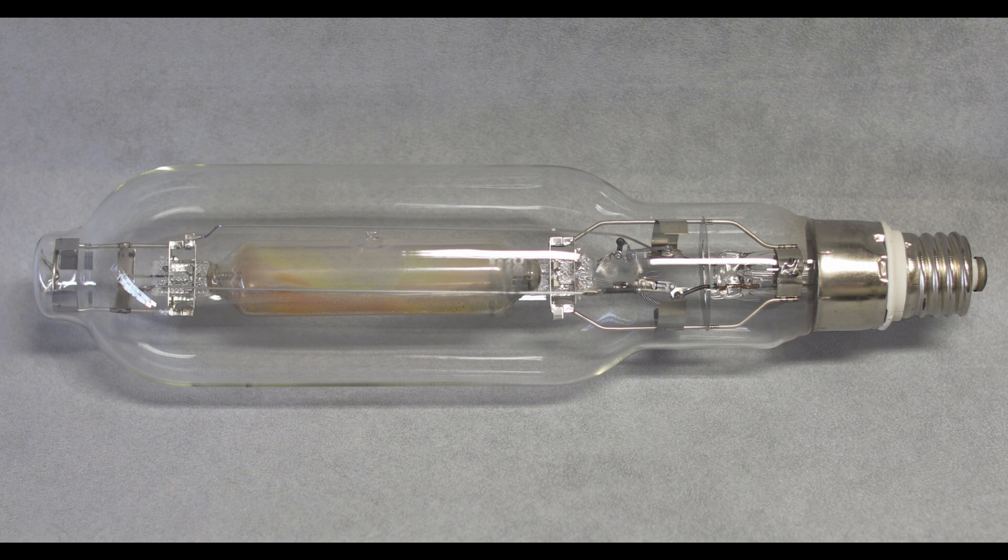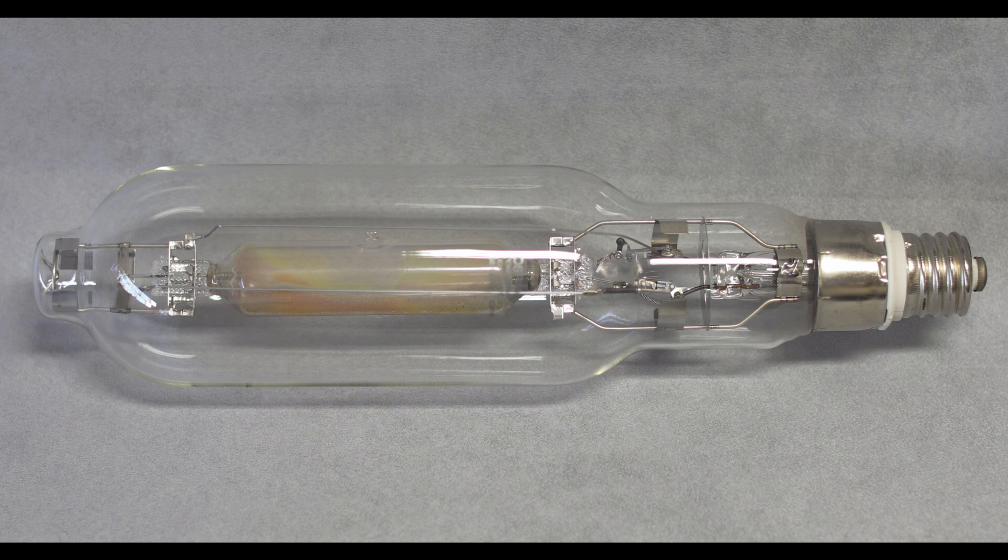G'day folks, it's me again. In today's video we're going to be looking at a nice great big massive metal halide lamp. It's not the one in front of you. The one in front of you is an Osram Powerstar HYT, 2,000 watts. It kicks out 205,000 lumens at a core temperature of 4,200 Kelvin and it lasts for 9,000 hours.